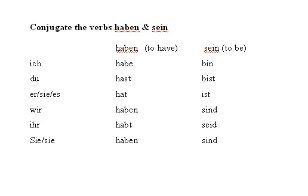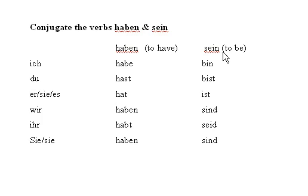Guten Tag. Today we're going to talk about the critical German verbs of Haben and Sein. Haben means 'to have' in German, and Sein is the German equivalent of the English 'to be.'